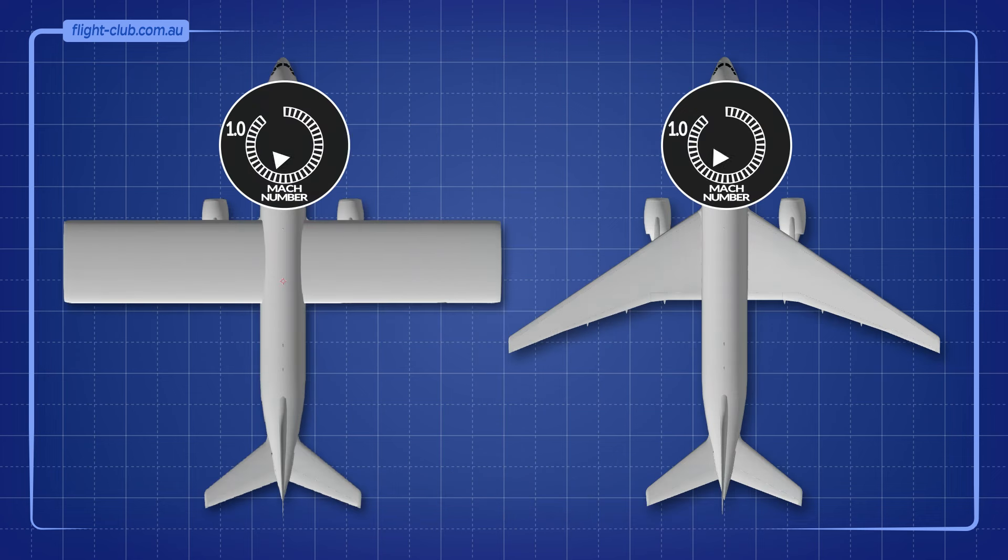Slower local airflow on swept wings means that this aeroplane can fly faster than the aeroplane with straight wings before the shock waves form and their negative impact takes effect.